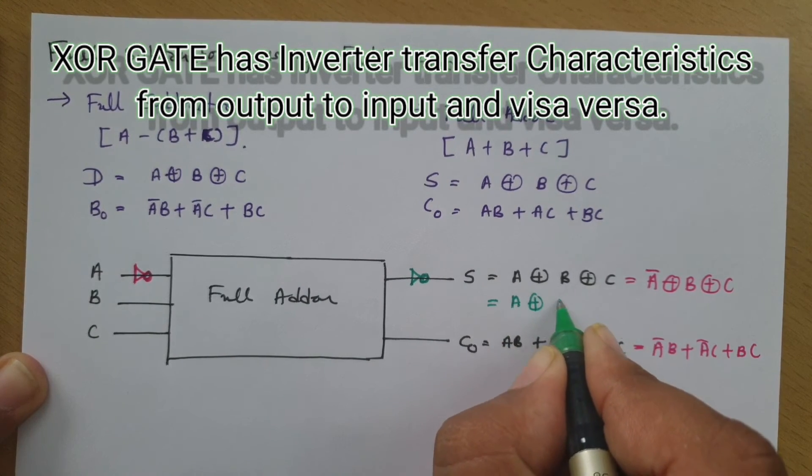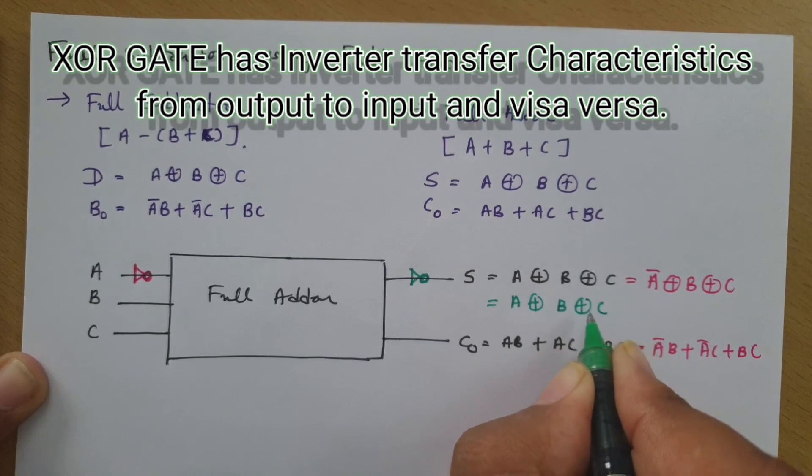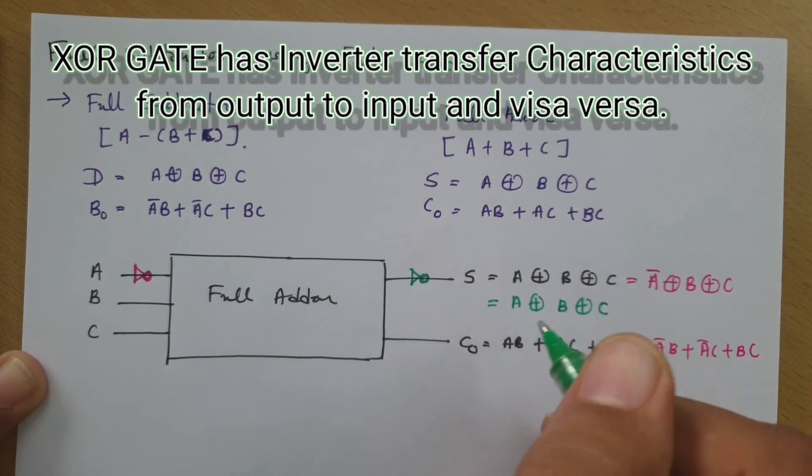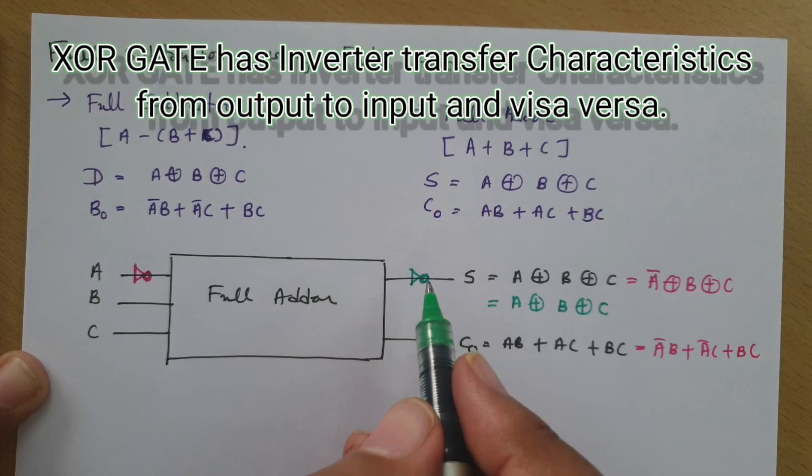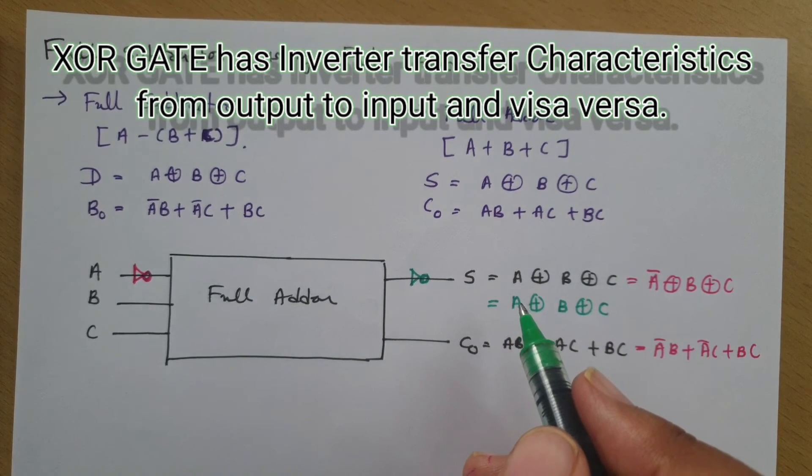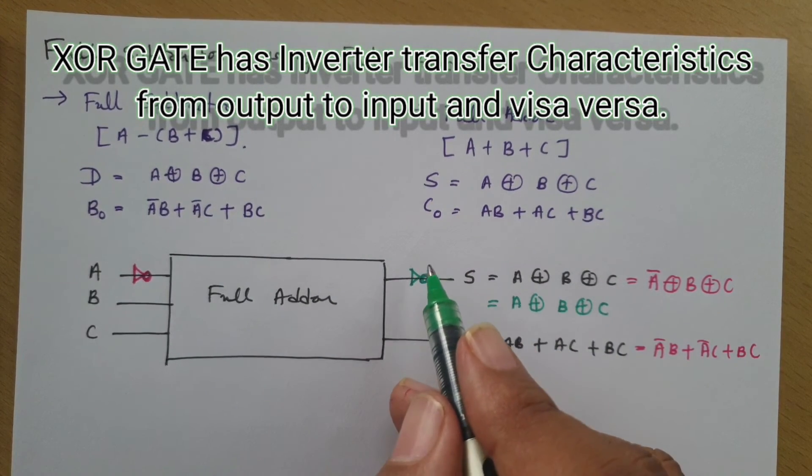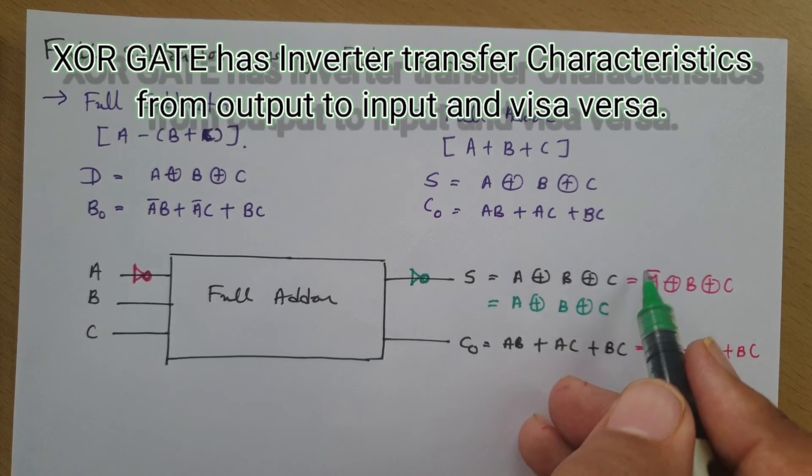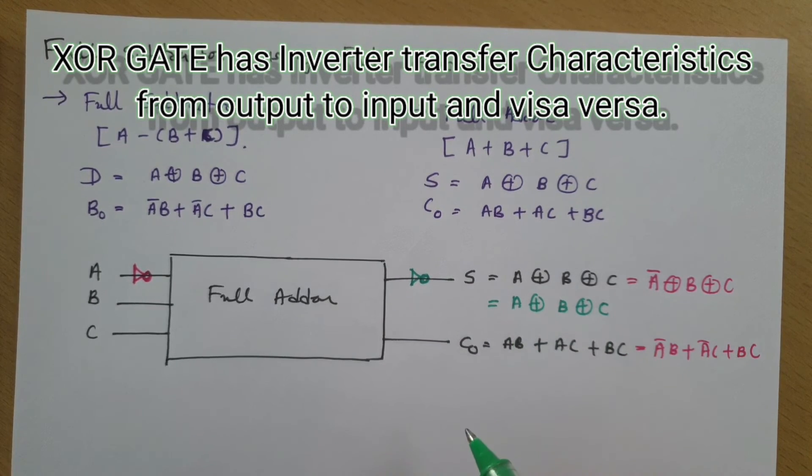So in XOR gate, there is a characteristic where if you do double inversion of any terminal at input or at output, that will cancel that inversion. So here, if you provide one more inverter, then this A bar will get translated into A.